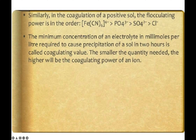The minimum concentration of an electrolyte required to cause precipitation is expressed in millimoles per liter — if given in moles, convert to millimoles. This minimum concentration required to cause precipitation in approximately 2 hours is known as the coagulating value. The smaller the quantity needed, the higher the coagulating power of the ion. Numerical problems based on this will be uploaded separately.